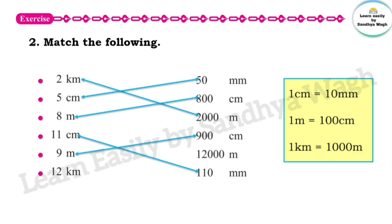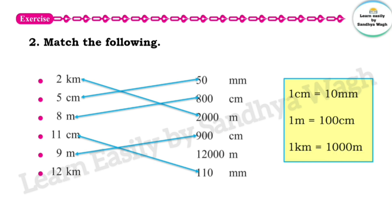12 kilometers: 1 kilometer is equal to 1000 meters, so 12 kilometers is equal to 12,000 meters.